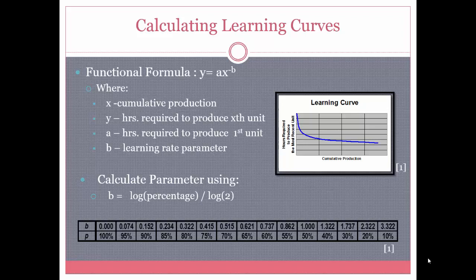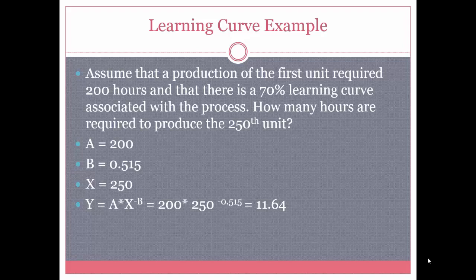Here is a learning curve example. Assume that production of the first unit required 200 hours and there is a 70% learning curve associated with the process. How many hours are required to produce the 250th unit? So a equals 200 hours, which is the time for the first unit, and x equals 250 because we want to find the hours required to produce the 250th unit.